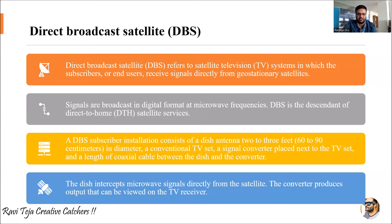Signals are broadcasted in digital format using microwave frequencies. Since signals are transmitted and received over thousands of kilometers, the frequencies used are mostly in the gigahertz range — electromagnetic waves known as microwaves.